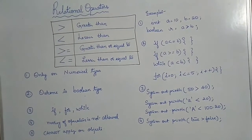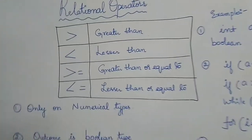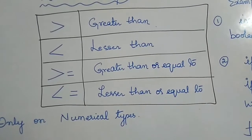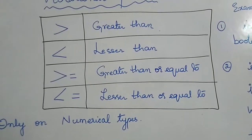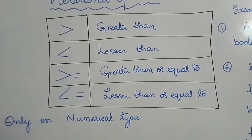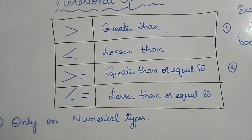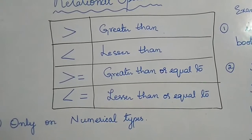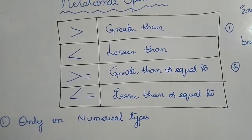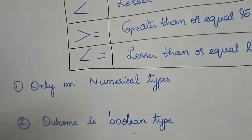There are four kinds of relational operators: greater than, less than, greater than or equal to, and less than or equal to. These relational operators are used to determine the relationship between two operands. They cannot be used on more than two operands — nesting of operators is not allowed. We will see all the rules for how to use these relational operators.